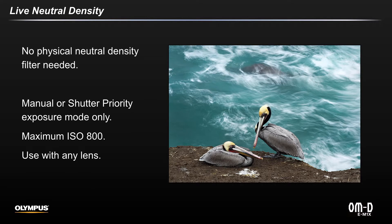Note that the camera must be in manual or shutter priority and the maximum usable ISO is 800. An extra plus: due to the built-in image stabilization up to 7.5 stops in the EM1X, you can combine Live ND with handheld photography at very slow shutter speeds. For example, the photo here was captured handheld at 1.6 seconds.